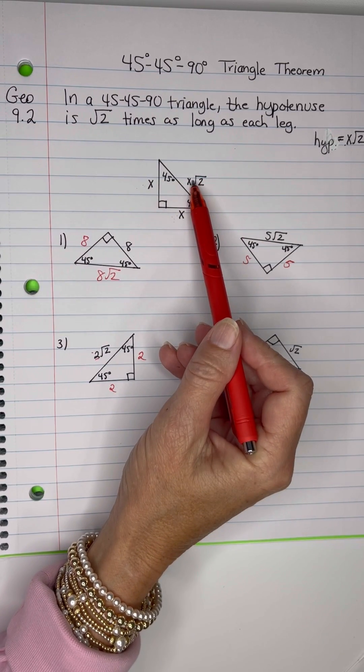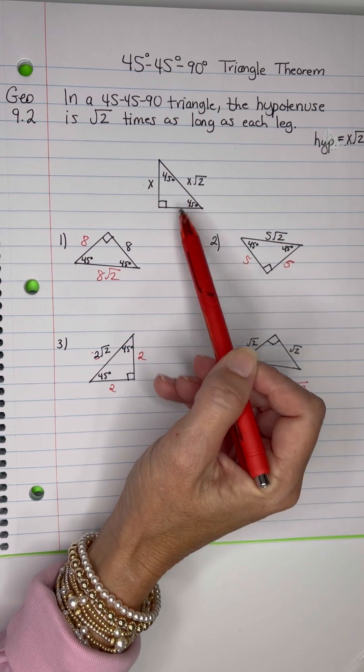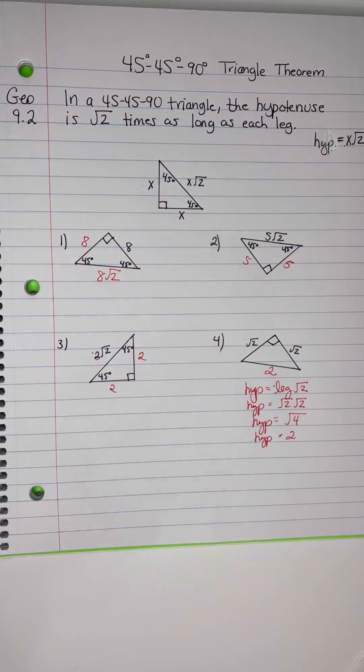X and X and X root 2, congruent sides, we've got 2. X and X and X root 2, congruent sides, we've got 2.